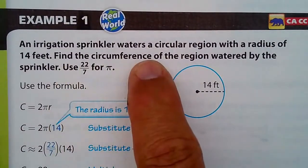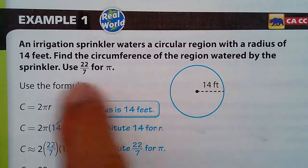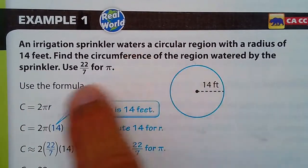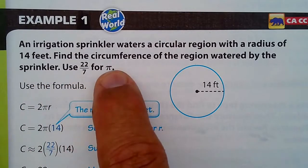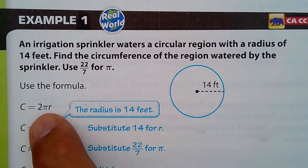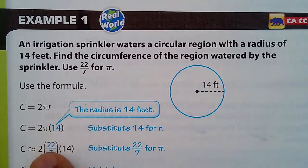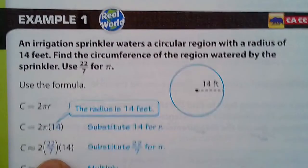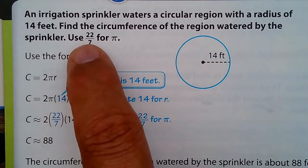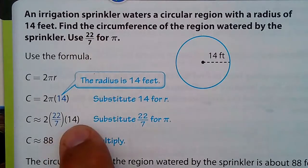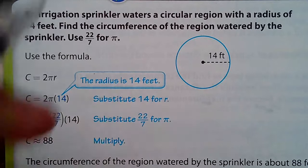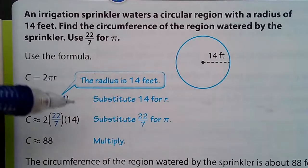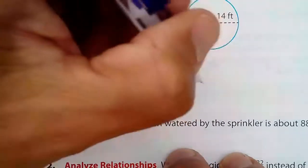Here's an irrigation sprinkler problem. Water is sprinkled in a circular region with a radius of 14 feet. Find the circumference. We use C = 2πr because we're given the radius. So it's 2 times pi times 14. They use 22/7 instead of 3.14 because 14 is a multiple of 7. Writing it as 2 × (22/7) × (14/1), we can cross-cancel: 14 divided by 7 is 2, leaving 2 × 22 × 2.